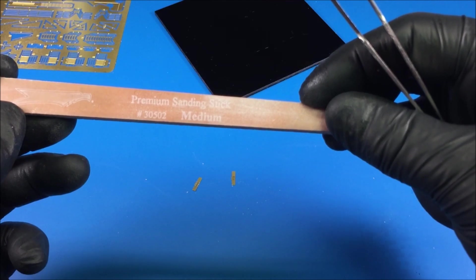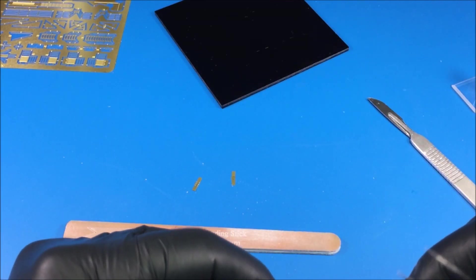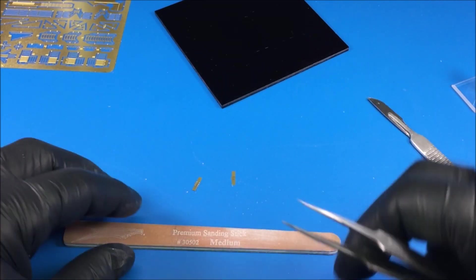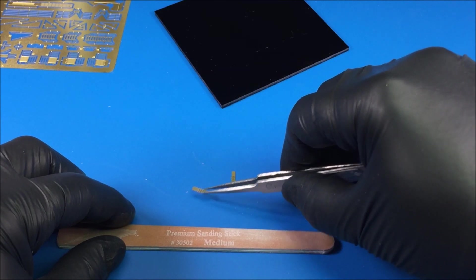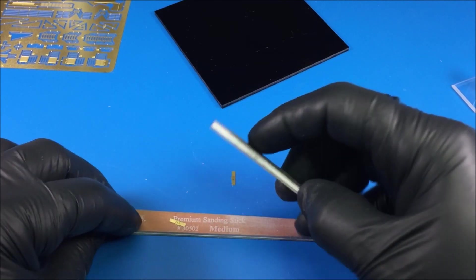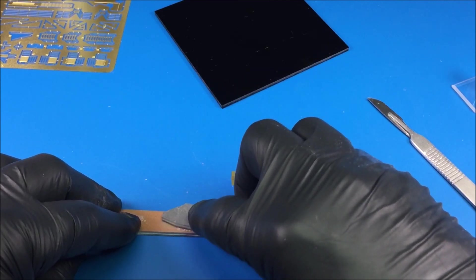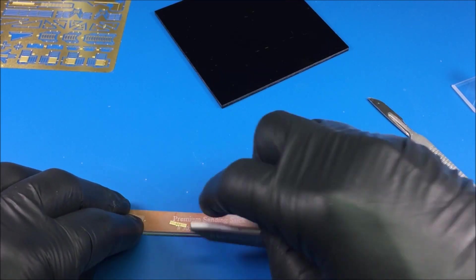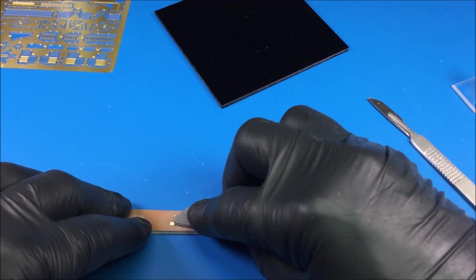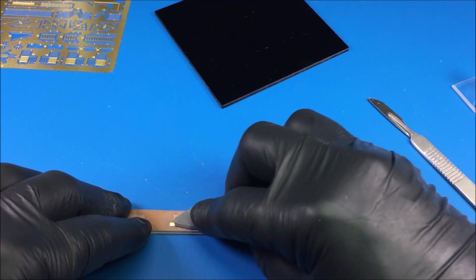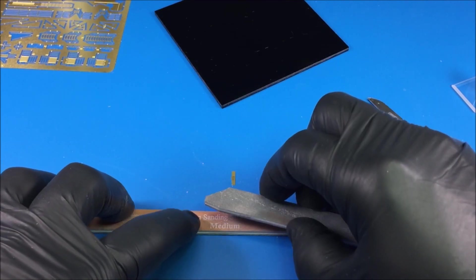So the next thing you want to do - I like to do this anyway just to ensure paint adhesion - this is a medium sanding stick and then I have a fine sanding stick. You just want to take the piece, stick it on there, and this way your photo etch won't move.